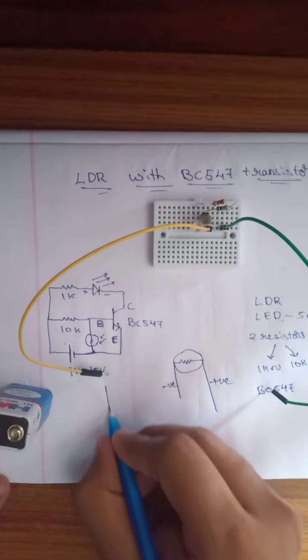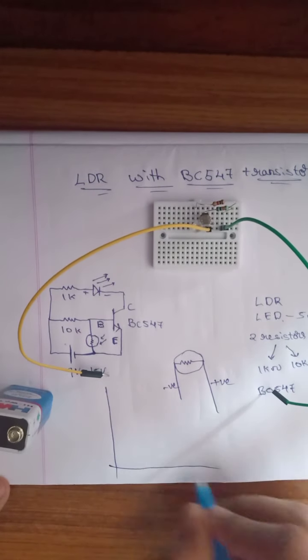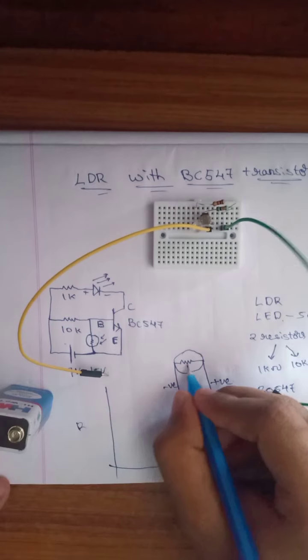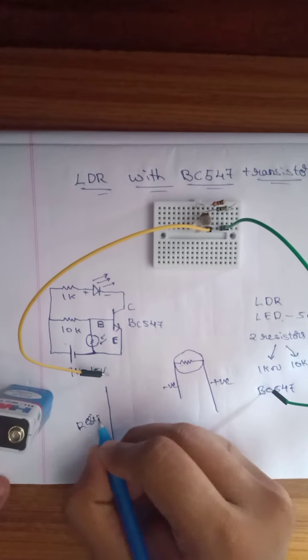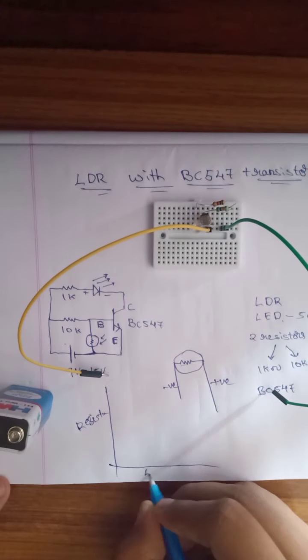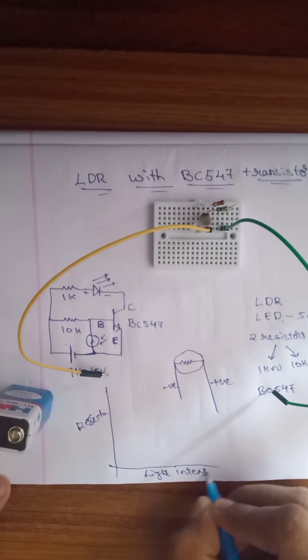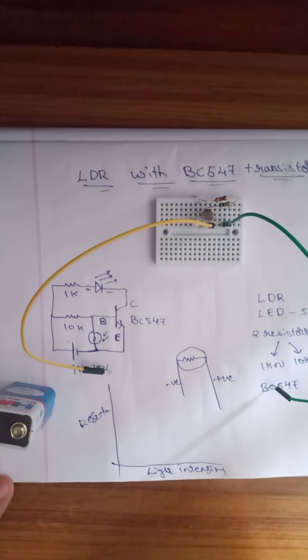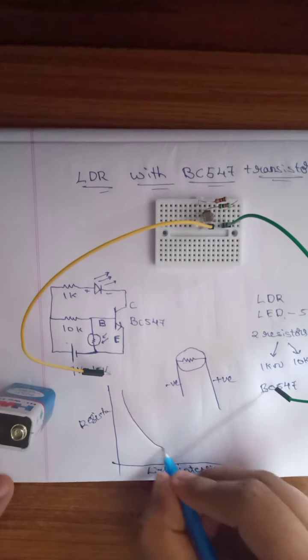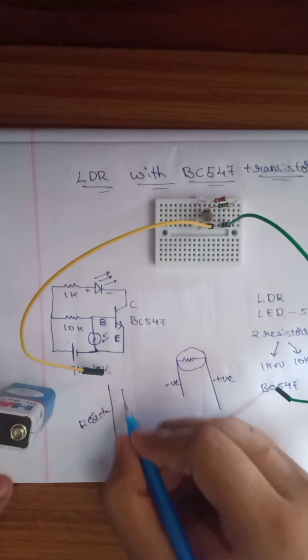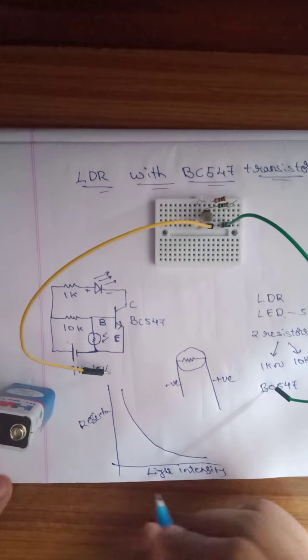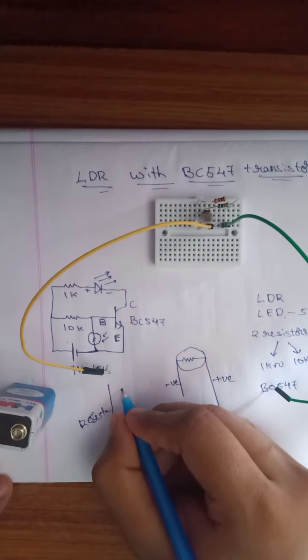When you draw a graph between the resistance, this is resistance, and light intensity, you get a graph like this. This graph shows that light intensity is low, so resistance is high.